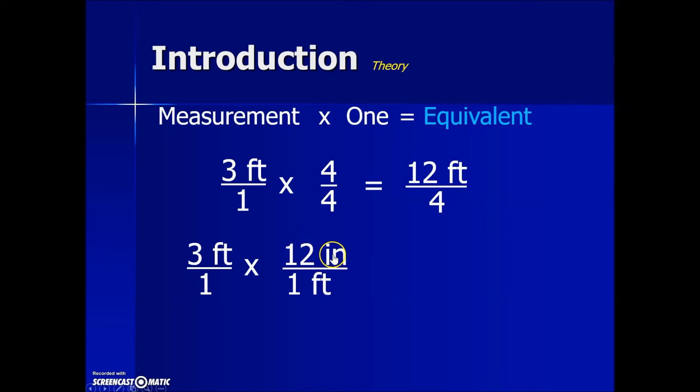Now we could have put 1 foot over 12 inches, but you're going to see in a minute that any time we have a common value in the numerator and the denominator, we can cancel them out. And by having the 1 foot factor in the denominator, it's leaving us with inches in the numerator, which is going to take our original feet measurement and convert it into inches.